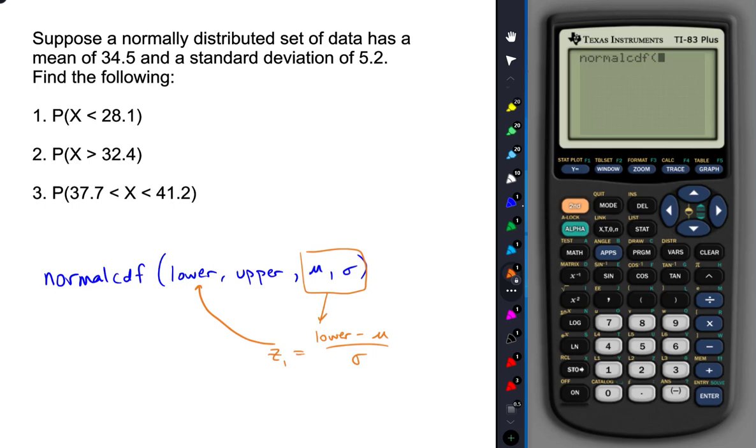Now, how do you come up with the lower and upper bounds? Well, that's exactly the same way that you did in the previous sections for normal distributions with standard normals.